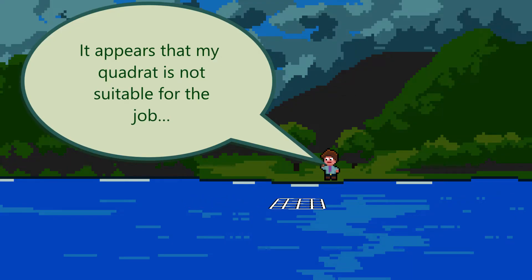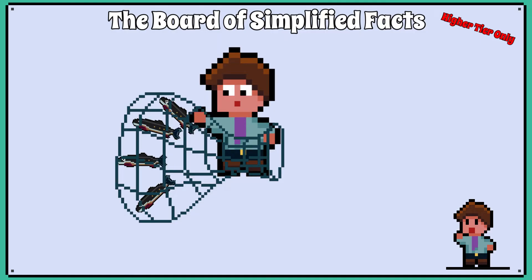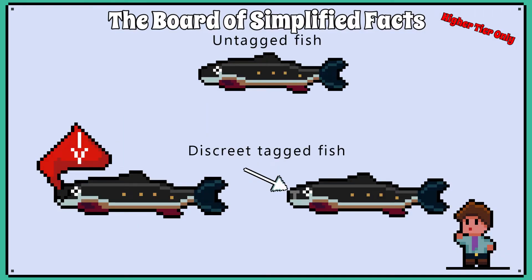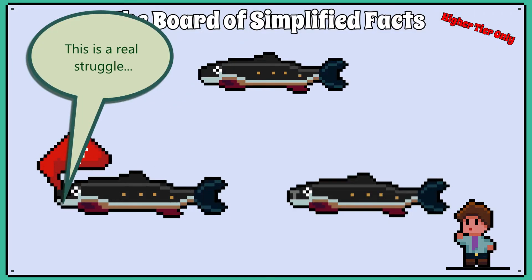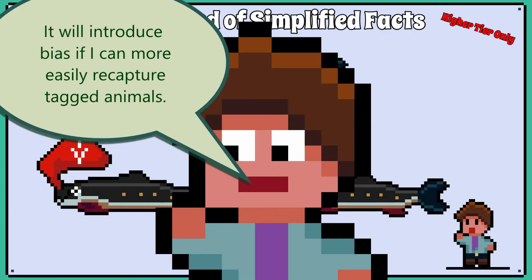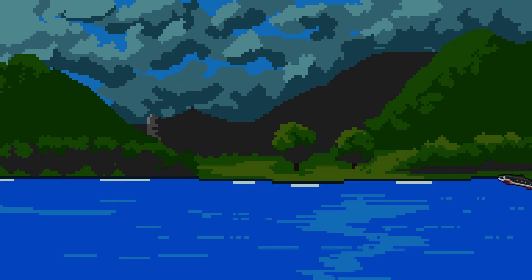So let's use the capture-recapture method to estimate the population size of Arctic char in Llyn Peris. All these numbers will be made up for the purpose of this video. The first step is to catch some fish in a net and mark them with a small tag. It is important that this tag is somewhat camouflaged so it does not affect their chances of survival — like being easier to spot by local predators — or affect the way they swim or eat. We also want to avoid bias by making them easier to recapture. 500 fish were caught and tagged and then released back into the lake.